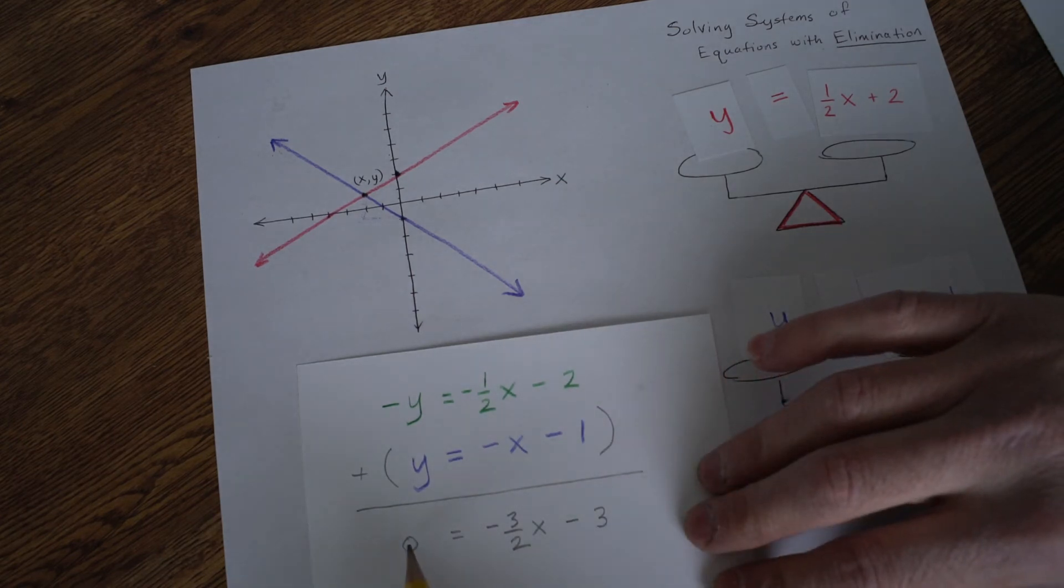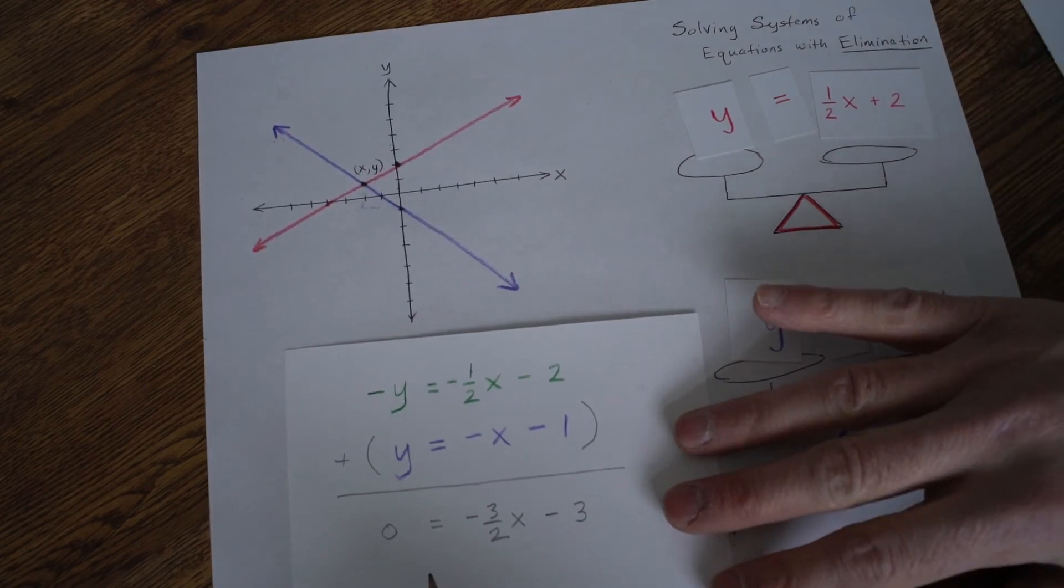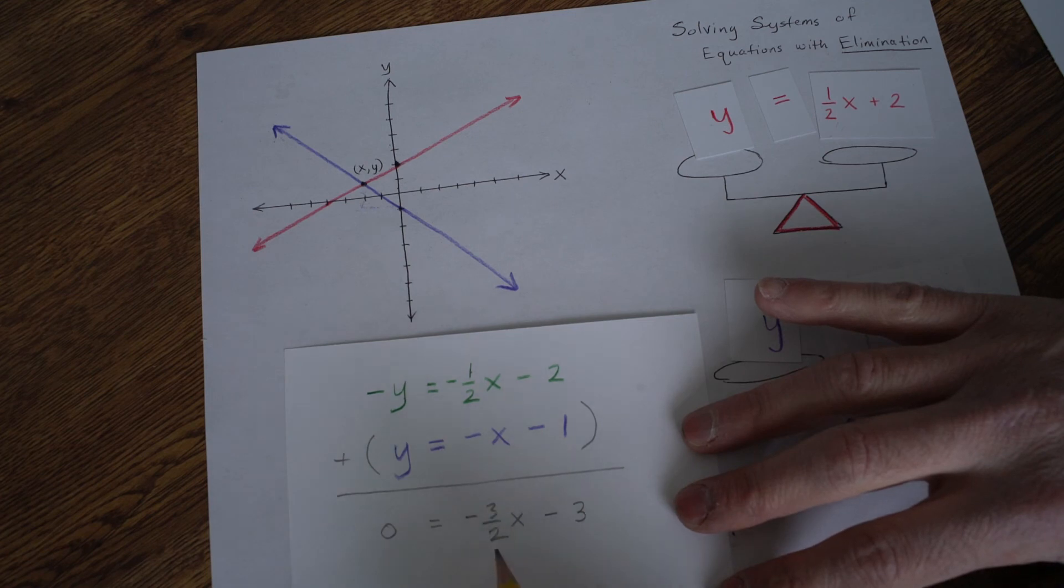So we have a 0 over here because we eliminated y's. Again, that's why we call it elimination. Then we have this over here. Negative 3 over 2x or negative 1 and a half x minus 3.